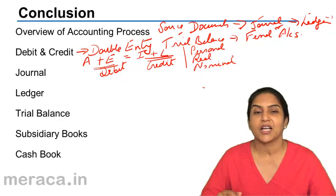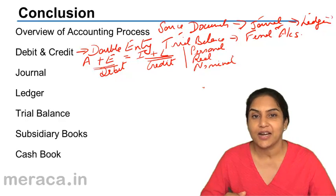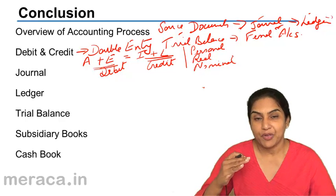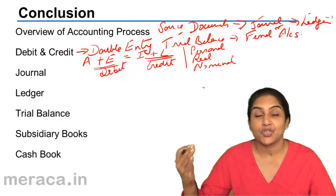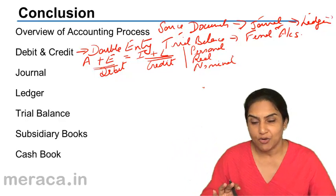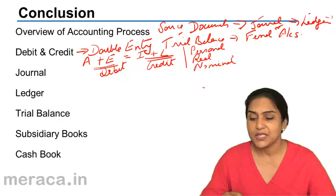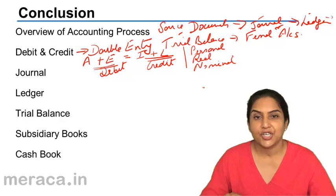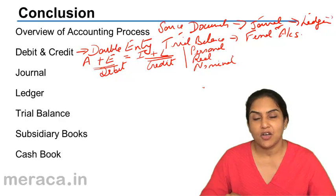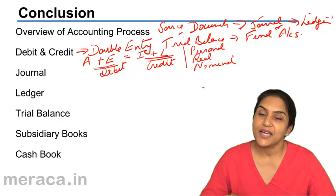What is a representative personal account? An account like an outstanding salary account, which represents the liability of the business to the employee. It represents the employee's account. Personal accounts, real accounts - assets like cash, furniture, land, building, machinery, etc. And nominal account consisted of expenses and incomes.